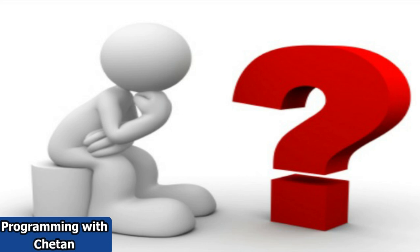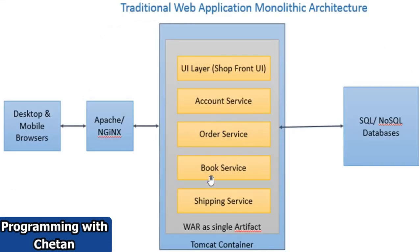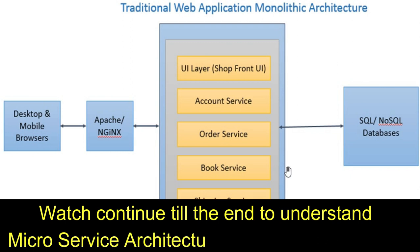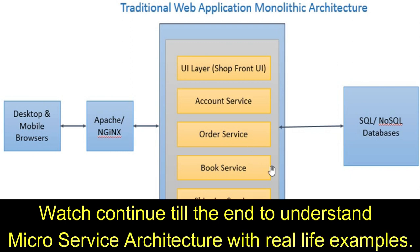Can you think of some problems that can occur here? Suppose I have a requirement to make changes in my order module. Since all components are linked together in a single unit, I need to test the account service as well, and I could inject a bug in the booking service. I need to test that too, and when it comes to deployment, I need to deploy the complete application again.